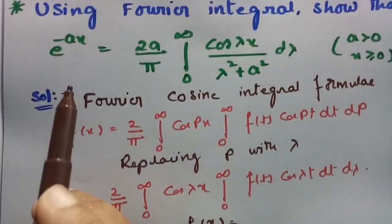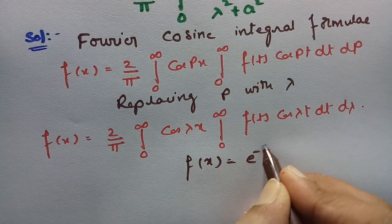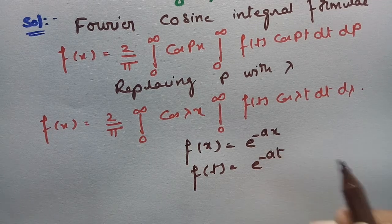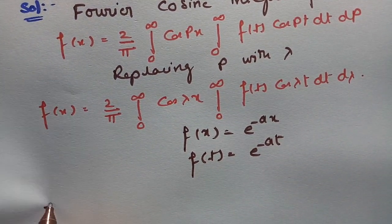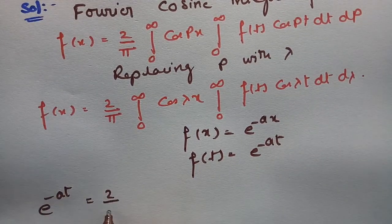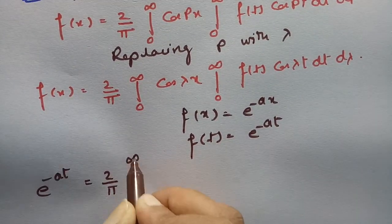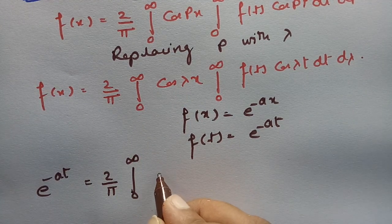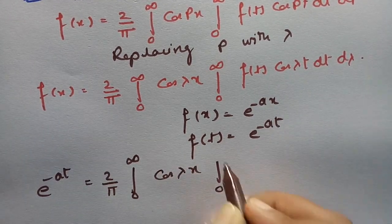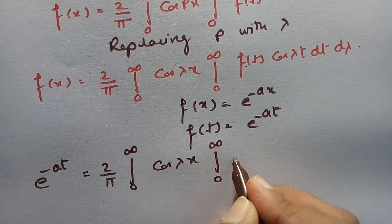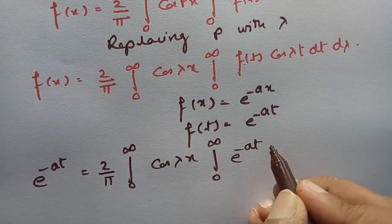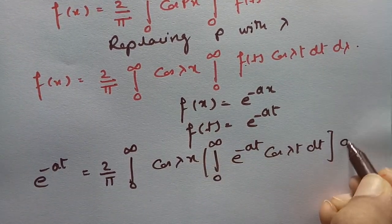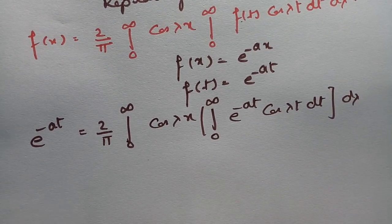f(x) is nothing but e^(-ax), and f(t) can be written as e^(-at). Now substituting this: e^(-at) equals (2/π) times the integral from 0 to infinity of cos(λx) times the integral from 0 to infinity of f(t), which is e^(-at), into cos(λt) dt, into dλ.